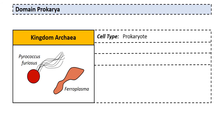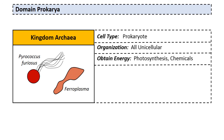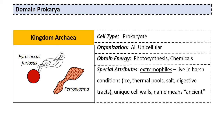Still in Domain Prokaryotes: Kingdom Archaea. These are prokaryotes, all unicellular, and they obtain energy through photosynthesis and chemicals — so far very similar to bacteria. What makes them unique is that they are extremophiles — organisms that can live in extremely harsh conditions. We can find them in arctic ice, thermal pools like those in Yellowstone National Park, extremely salty waters, and the digestive tracts of animals like termites. What really makes them different from bacteria is their unique cell walls that protect them in extreme environments.